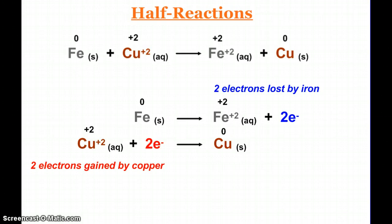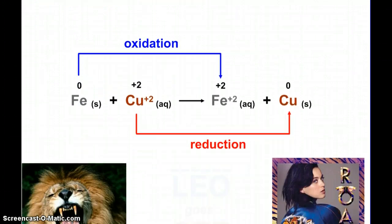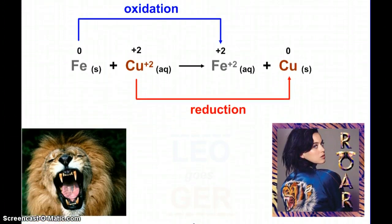Iron went from zero to plus two by losing the two negative electrons. Copper went from plus two to zero by gaining those. And so what we can do then is see where the oxidation happens and where the reduction happens. Because oxidation is defined as the losing of electrons. Iron lost electrons. That's the oxidation half reaction.